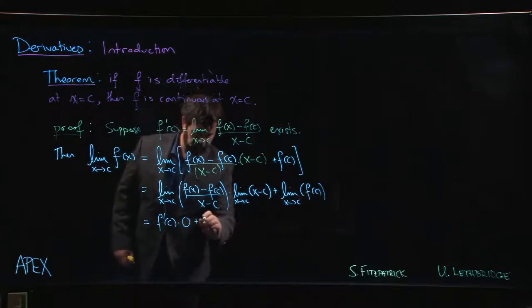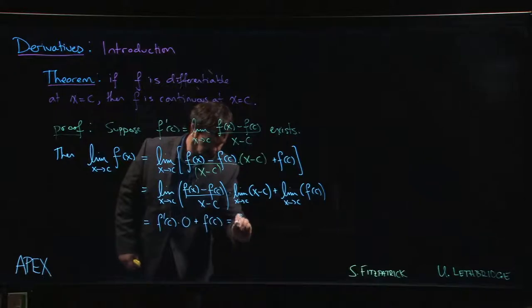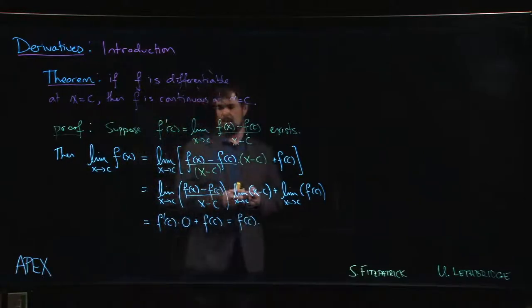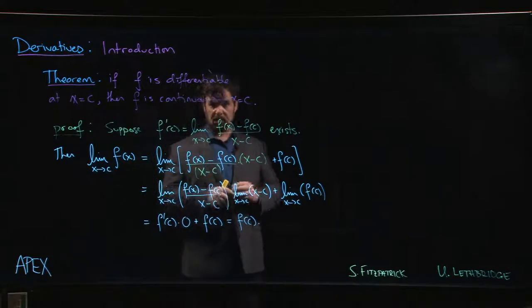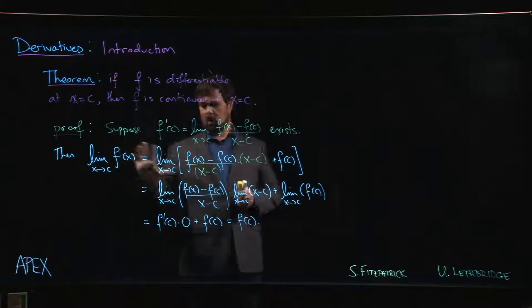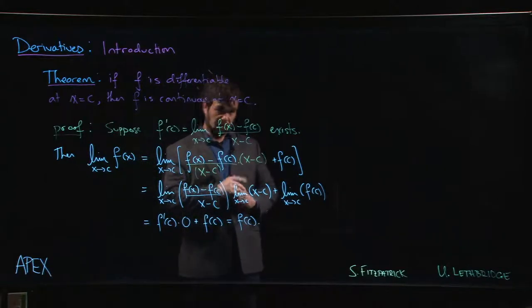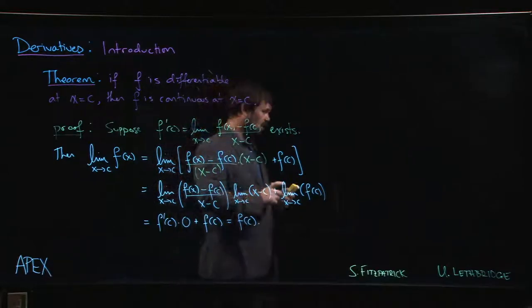f of c is a constant. Limit of a constant is just that constant, and adding 0 to a constant doesn't do anything, so we get that the limit is equal to f of c, just as we expected. So as soon as you assume that your function has a derivative at some point, automatically it has to be continuous. This is something that will come in handy from time to time, so it's a good thing to keep in mind.